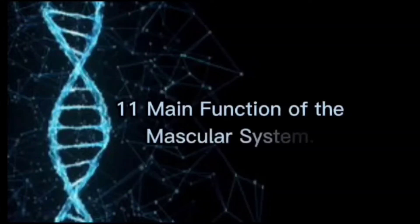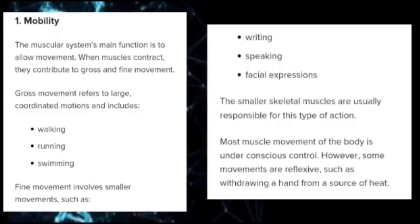The main function of the muscular system is mobility. When muscles contract, they contribute to gross and fine movement. Gross movement refers to large coordinated motions and includes walking, running, and swimming. Fine movement involves smaller movements such as writing, speaking, and facial expressions. The smaller skeletal muscles are usually responsible for this type of action.